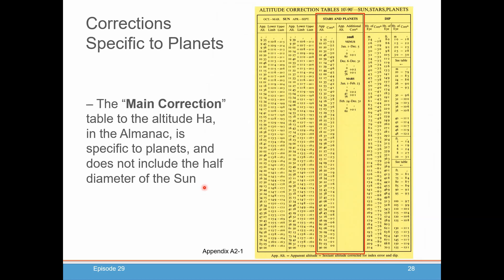So when you are going to correct your sextant altitude, your HS, you're not going to be using the Sun portion of the correction table. You're going to be using the stars and planets section. Instead of using these to correct for refraction and et cetera, you're now going for the stars and planets. You're going to use this column here that's within the stars and planets section. So this is the first correction to your HS.